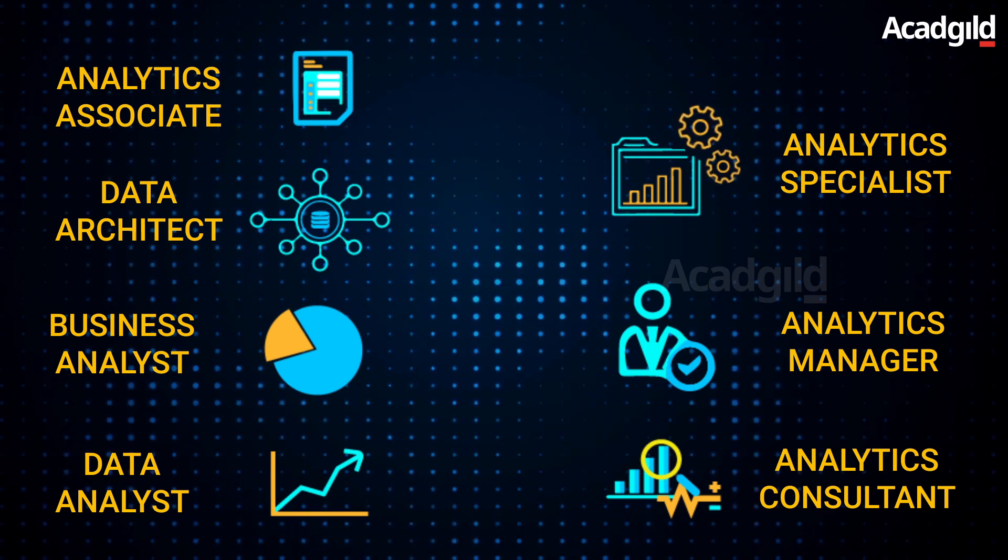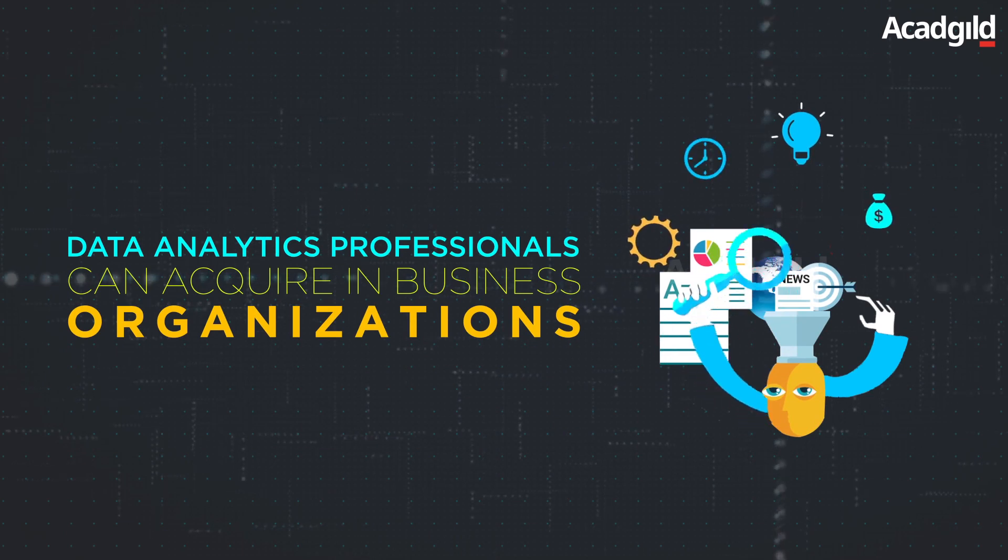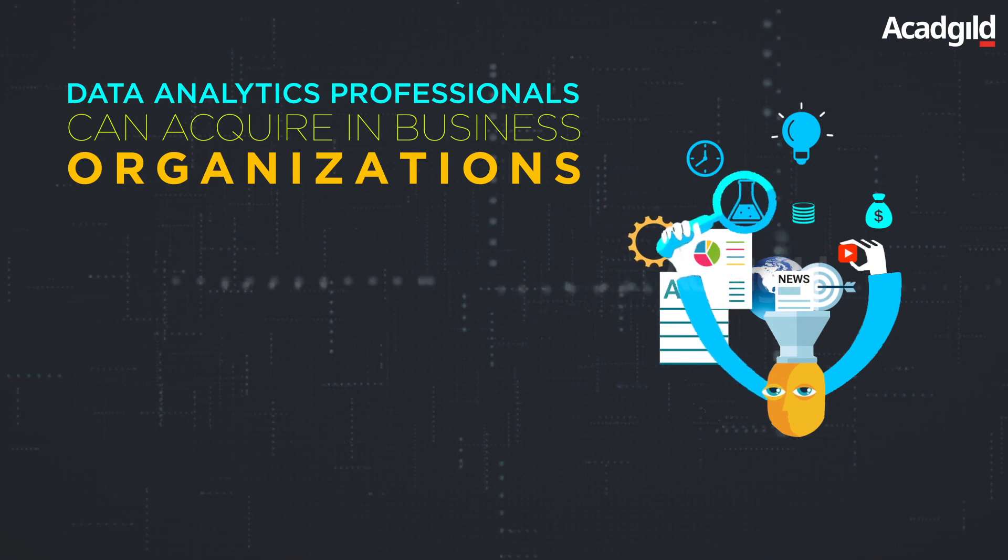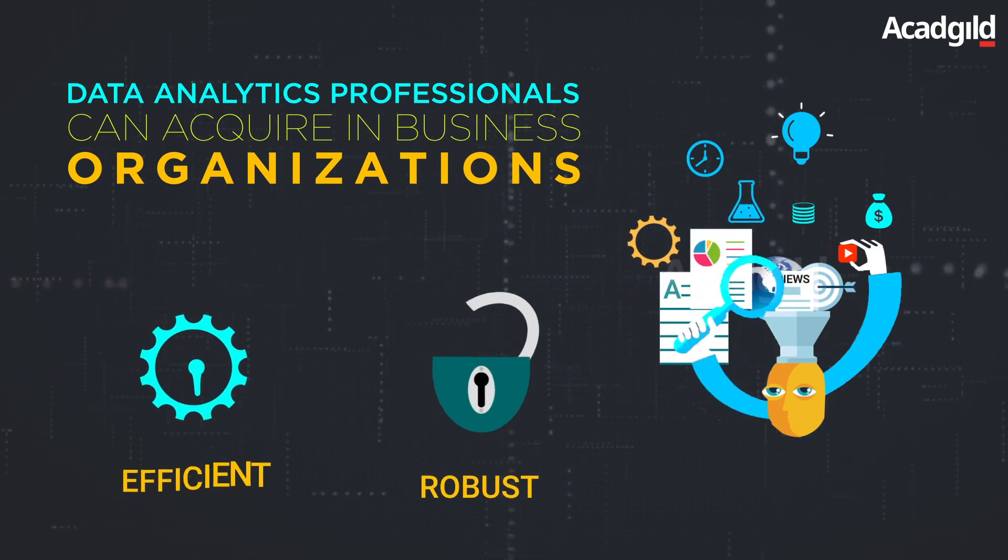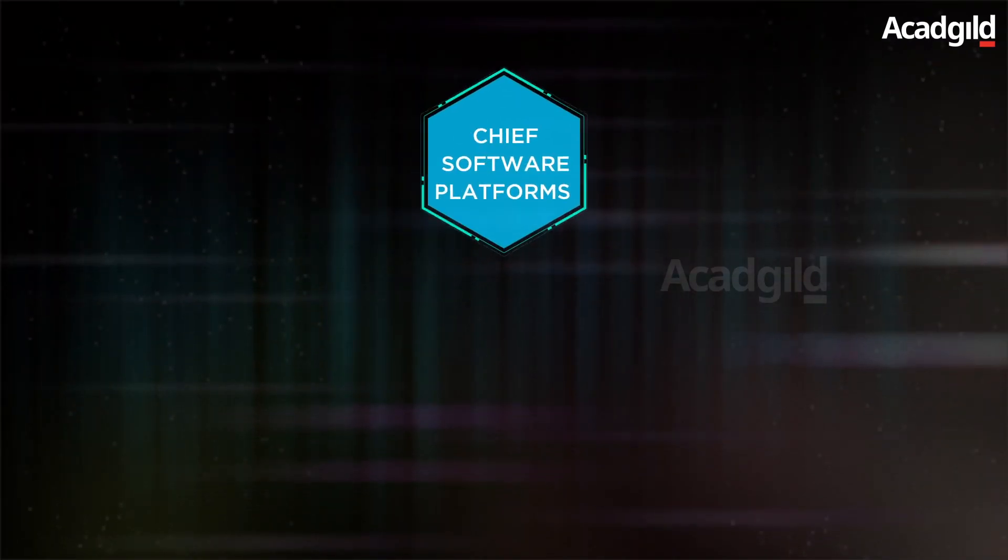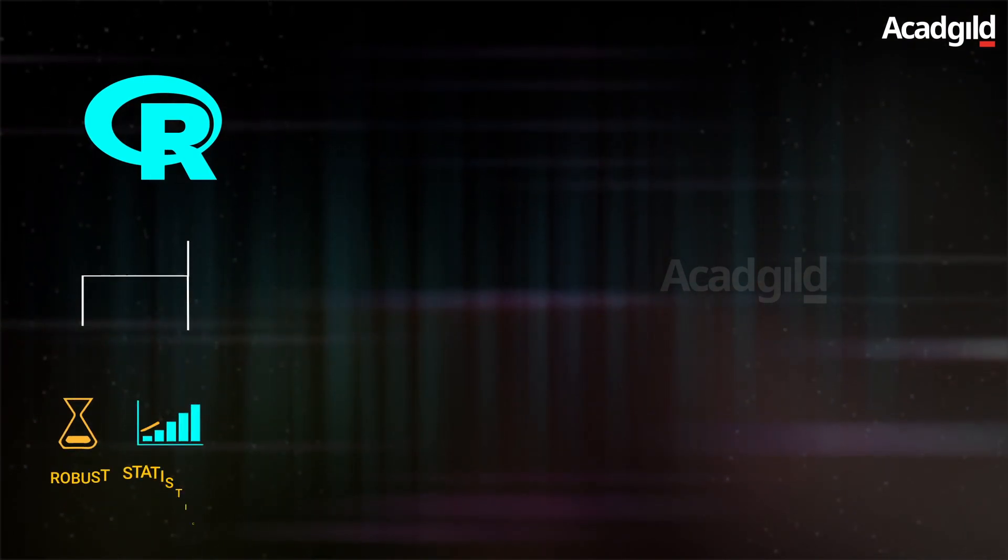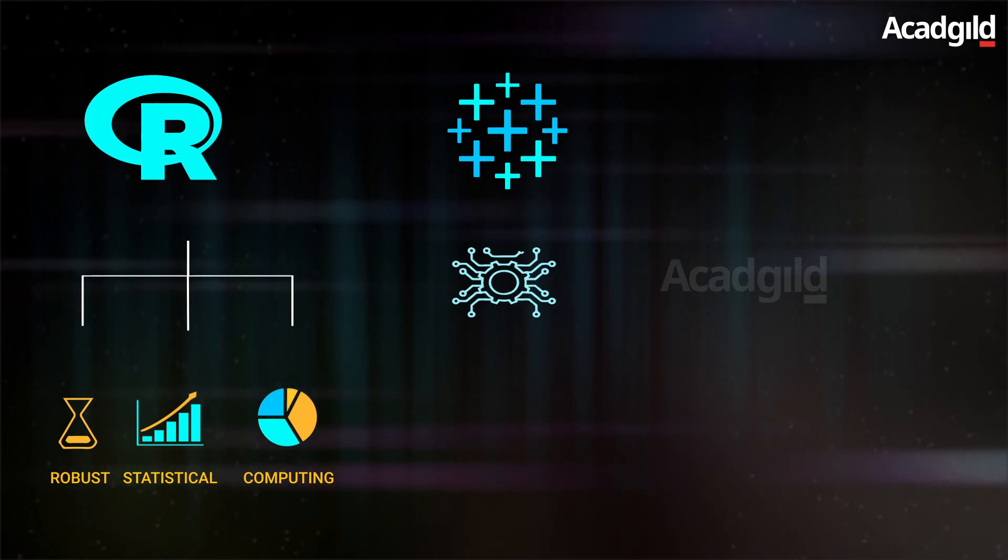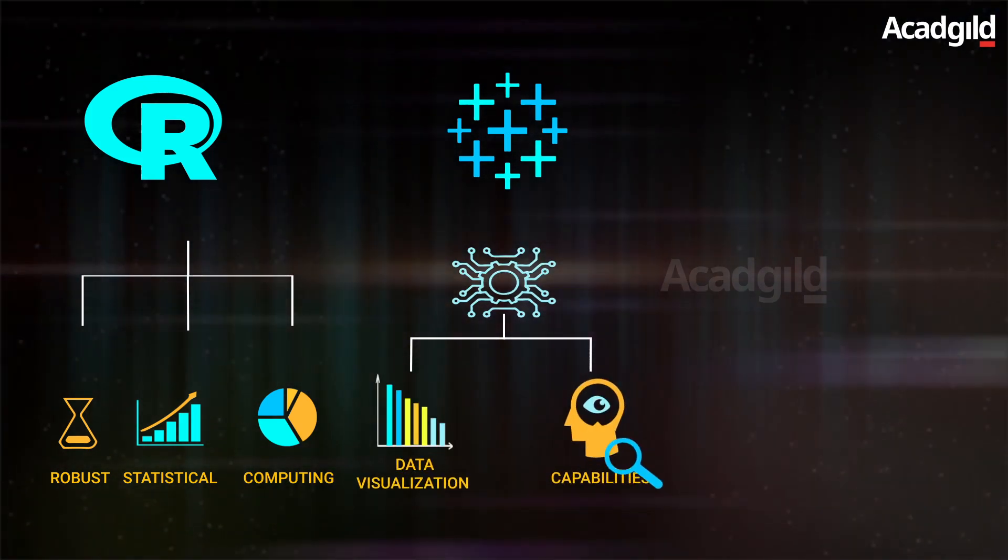These are only some of the job titles that data analytics professionals can acquire in business organizations. The list is presumably greater. Now, let's learn about key software platforms that make data analytics the robust and efficient process it is. The chief software platforms are R, Tableau and Excel. R is one of the robust statistical computing solutions. Tableau is the foremost business intelligence platform that offers eminent data visualization and exploration capabilities.